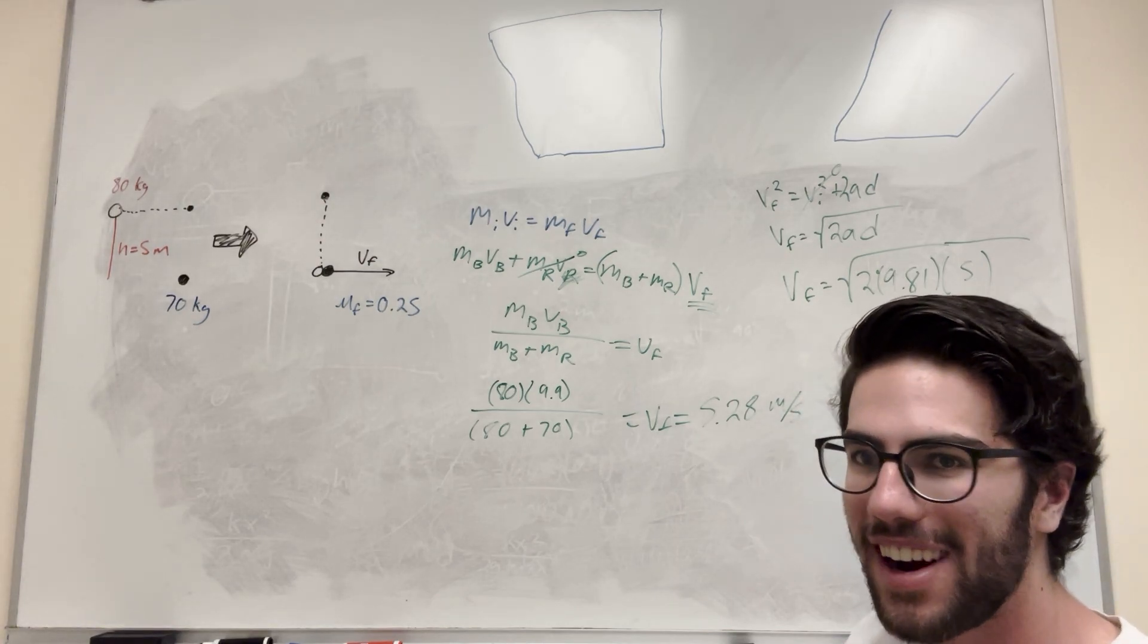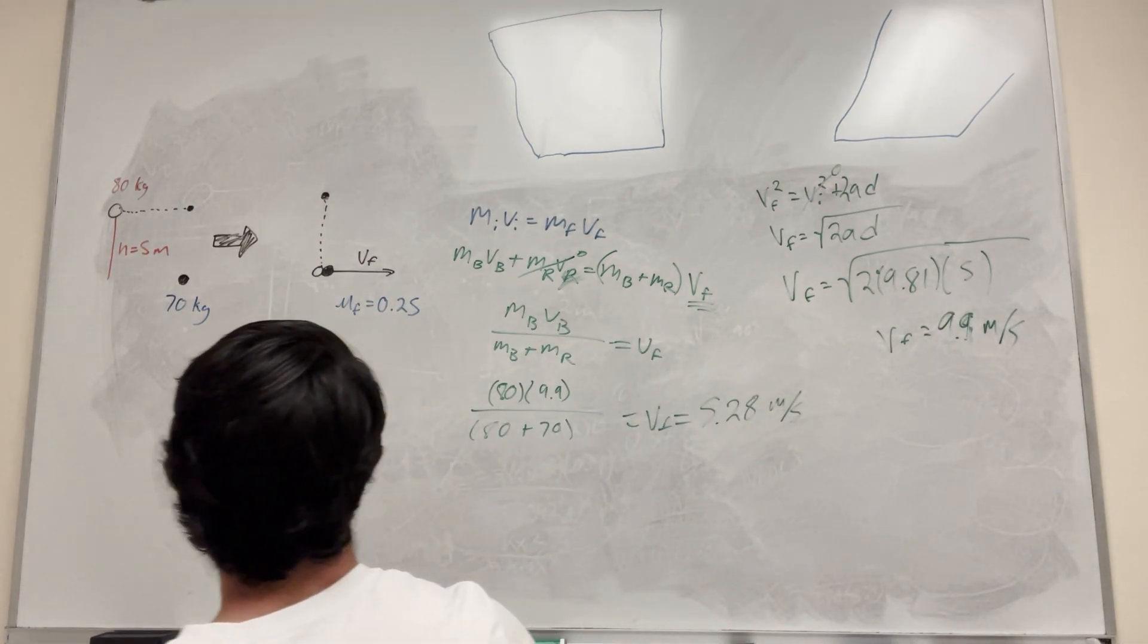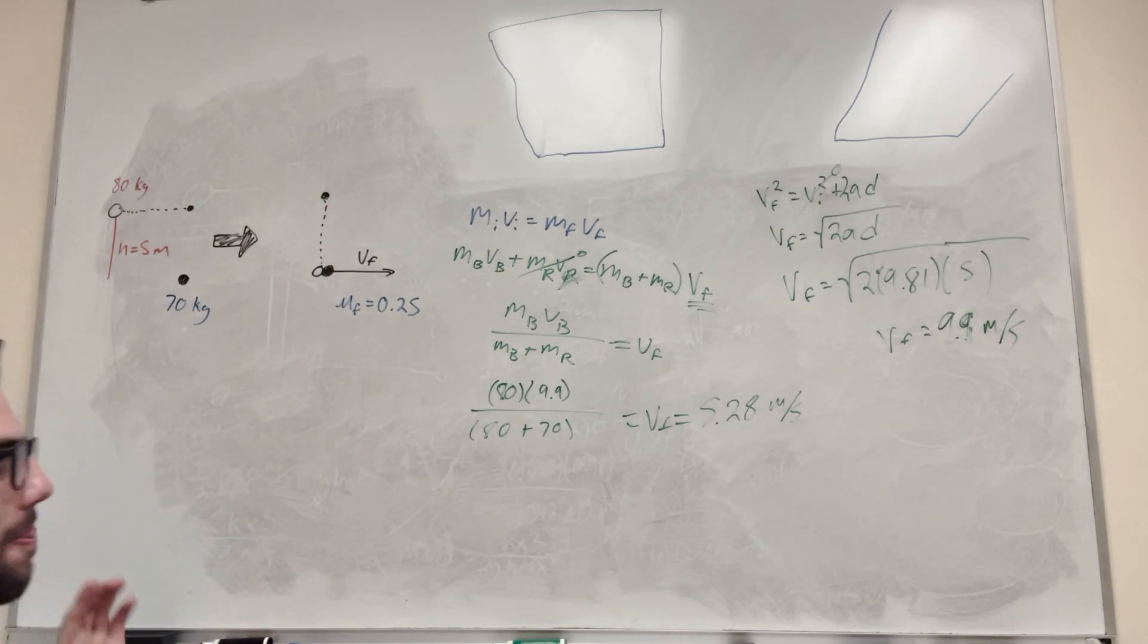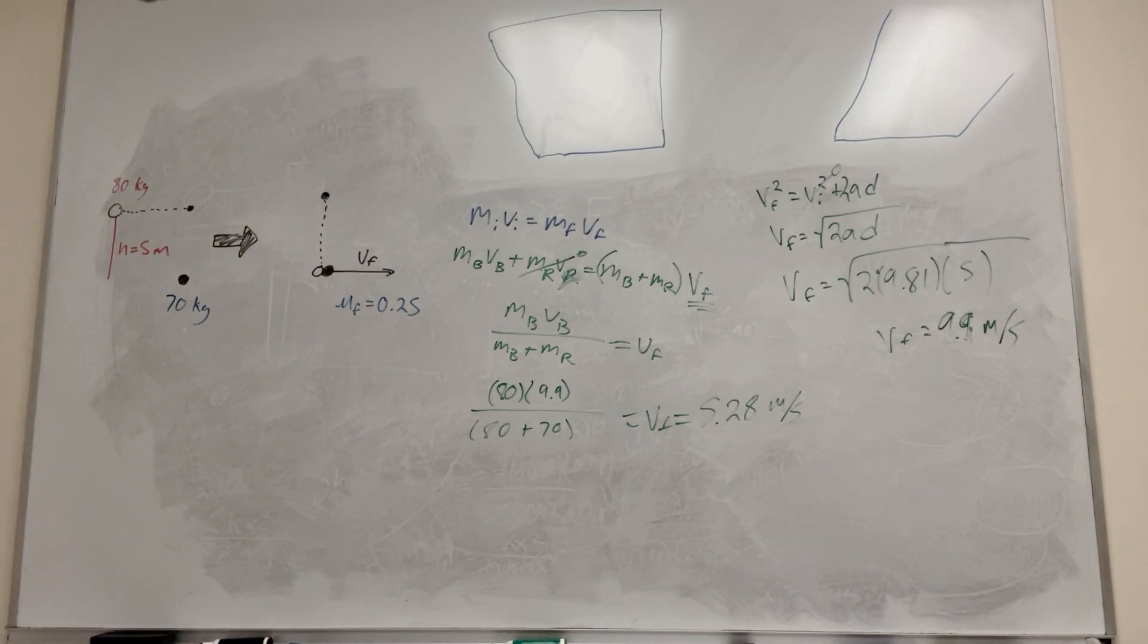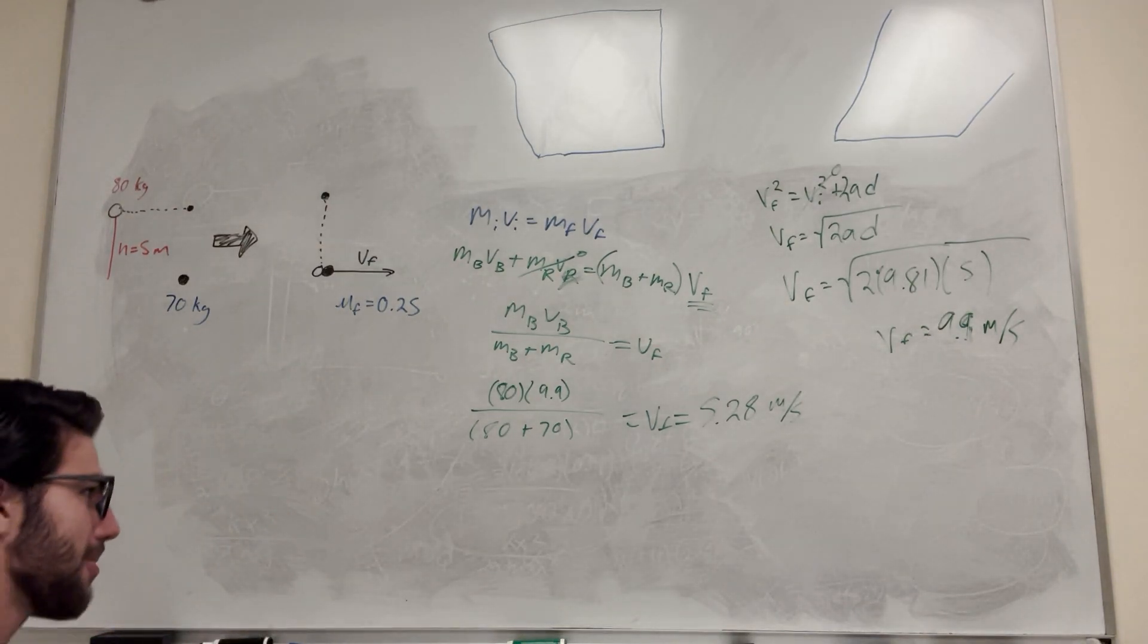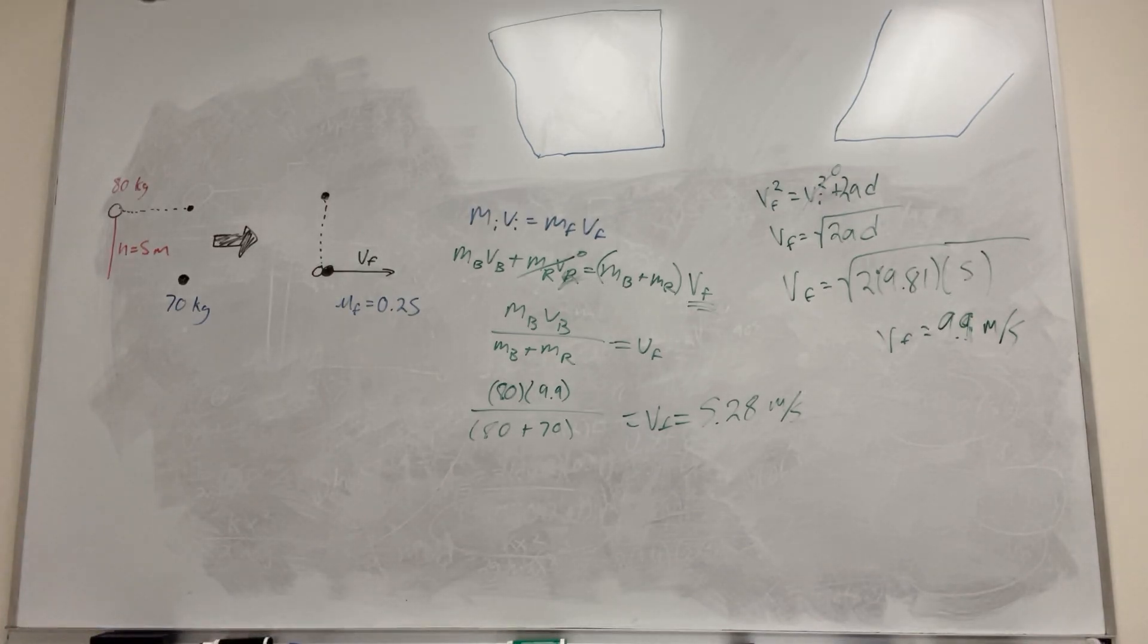So this is the actual velocity final. But this is not done yet. It wants to know how far they slide after they do collide. So this is where we pull in the work energy formula. What is the work energy formula? I've done this many times on my channel. So I hope you've seen it by now.